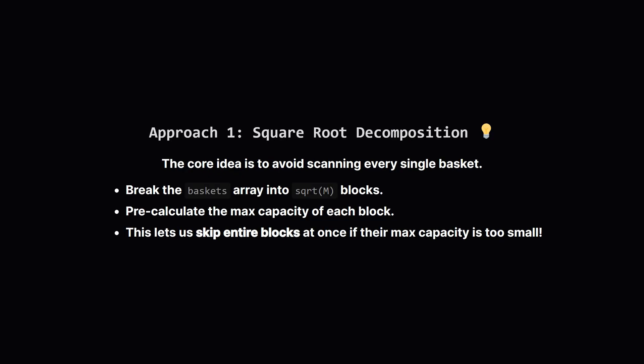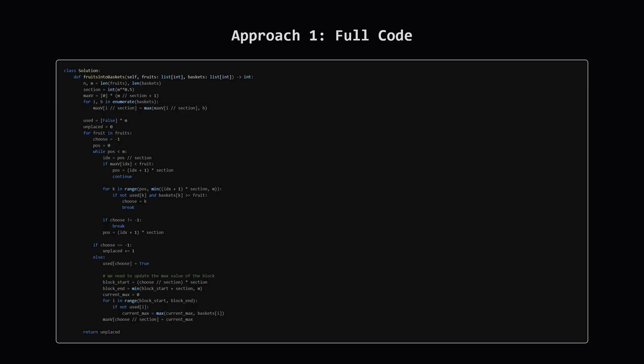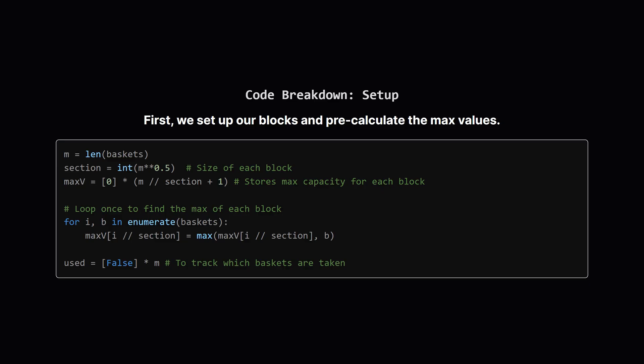Our first optimization uses a technique called square root decomposition. The goal is to avoid that slow full scan of the baskets. We do this by breaking the giant baskets list into smaller, more manageable chunks or blocks. For each block, we figure out ahead of time what the largest capacity basket inside it is. Here's the full Python code. The first part is all about preparation: we figure out our block size, which is about the square root of the number of baskets. Then we create a list, max_phrases, to hold the maximum capacity in each block, and a used list of false values to track which baskets we've filled.